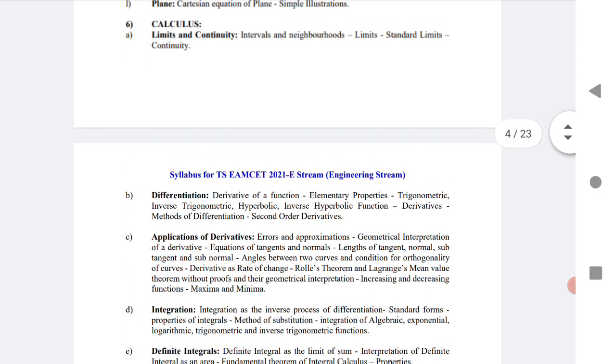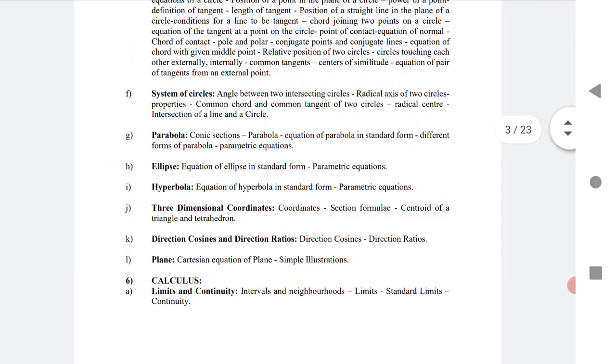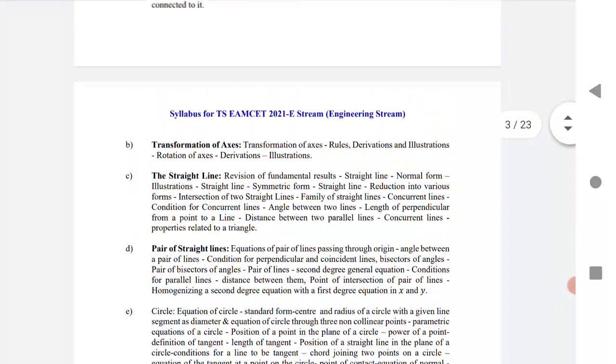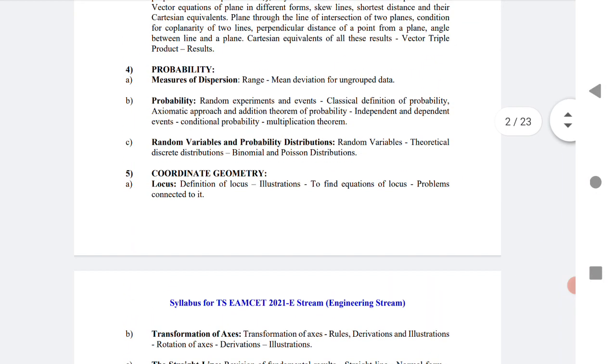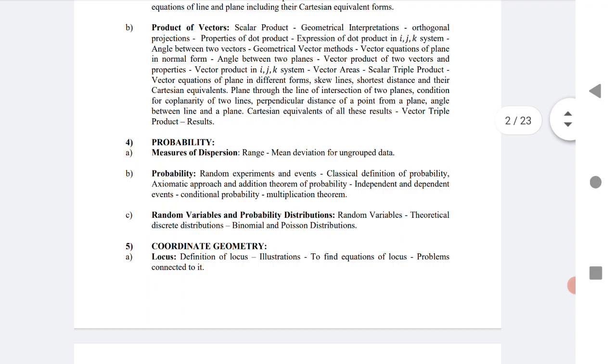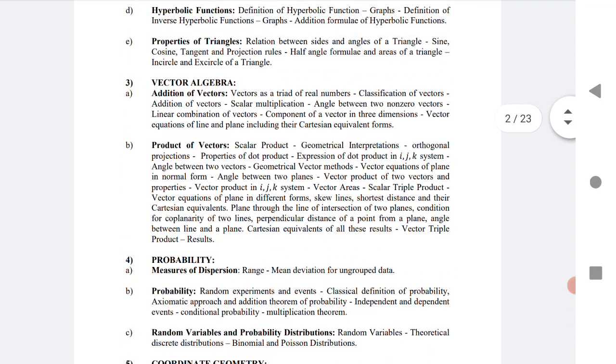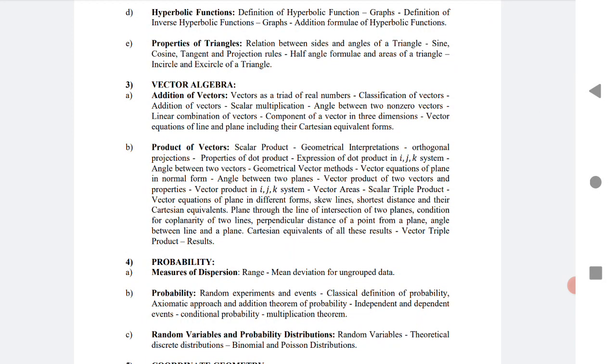If you practice all chapters of coordinate geometry, you will get 10 to 12 questions. Probability will give you 5 to 10 questions. Vector algebra is 10 to 15 questions.